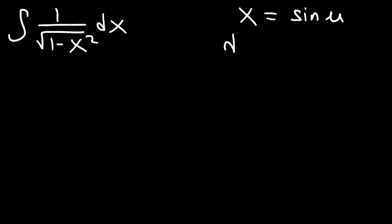dx is going to be the derivative of sine which is cosine u times du. So let's replace x with sine u and at the same time let's replace dx with what it equals, that's cosine u du.